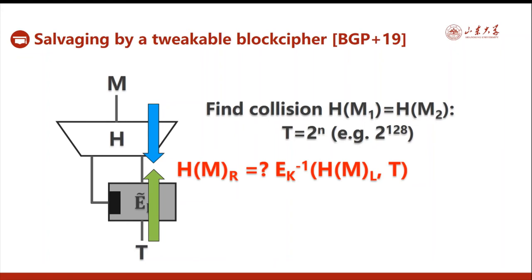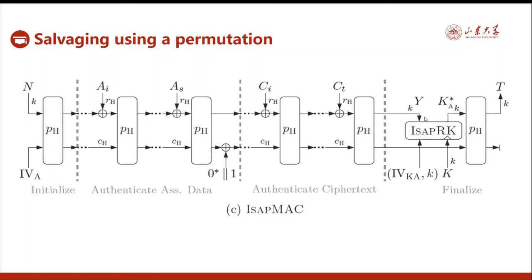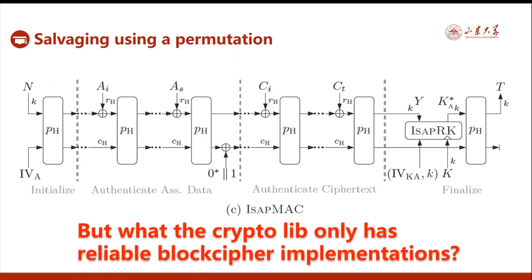Security can be strengthened using a tweakable block cipher. We use a hash with a 2n-bit digest, where half the digest is used as a tweak. Using the inverse of a tweakable block cipher also avoids verification leakage. This raises the collision-finding cost to 2^(2n), which is 2^256 for n=128, making it infeasible. Another approach uses a permutation with large input, as in the iCyp-MAC scheme. However, if the cryptographic library only provides reliable block cipher implementations, we need a block cipher-based instantiation, motivating our work.